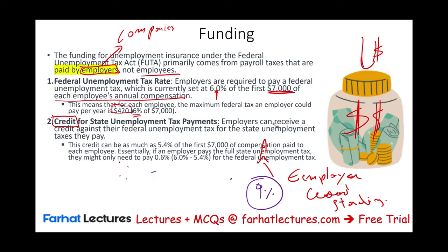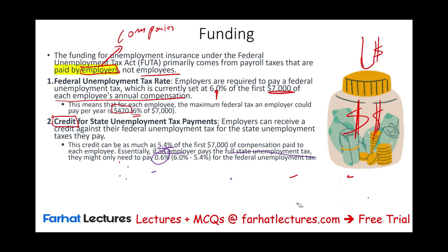This credit can be as much as 5.4% of the first $7,000. But remember, each state is different. Essentially, if an employer pays the full state unemployment tax, they may need to pay only 0.6% as the federal unemployment tax.